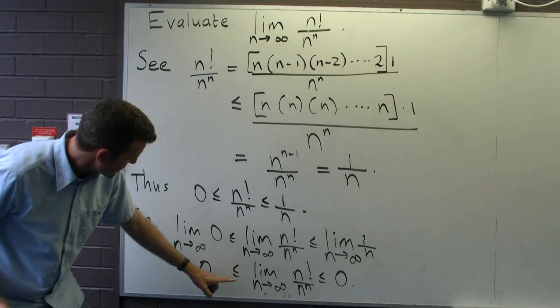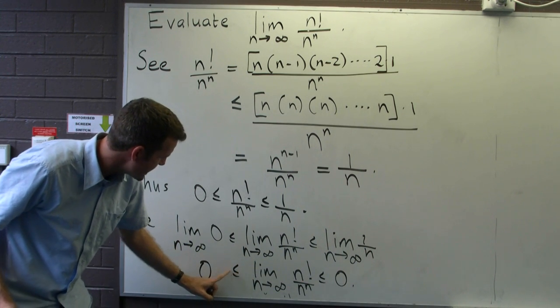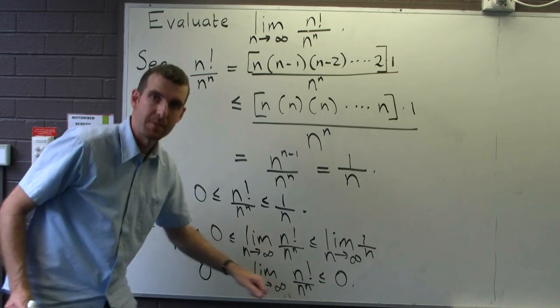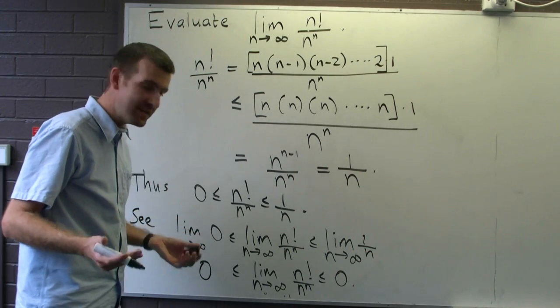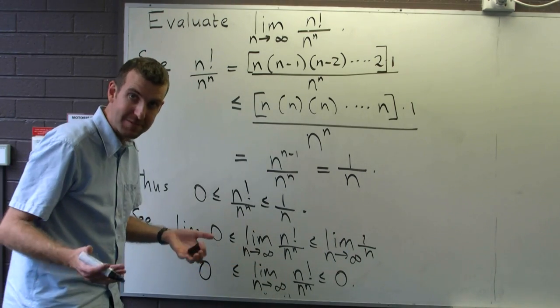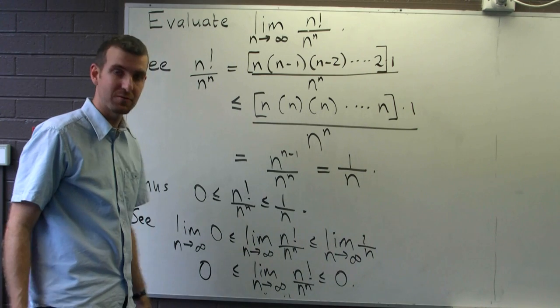So now, we have a situation where our limit is greater than or equal to 0, but less than or equal to 0. So the only explanation for this, the limit must be 0. The thing in the middle must be equal to 0.